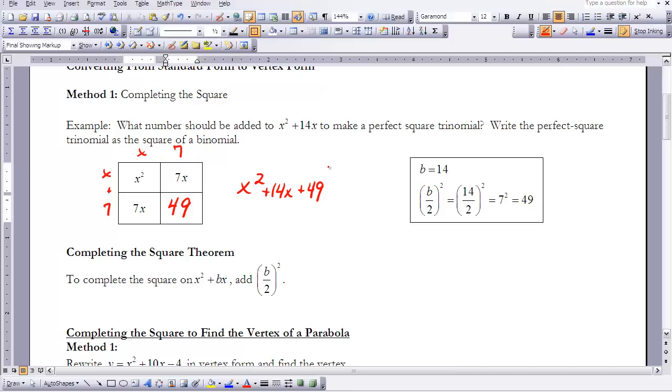Another way to look at it without using an area model is to take our value for b, which is 14. We take half of b and square it. Half of 14 is 7. 7 squared is 49. We're going to use this when working with completing the square for various other quadratics.